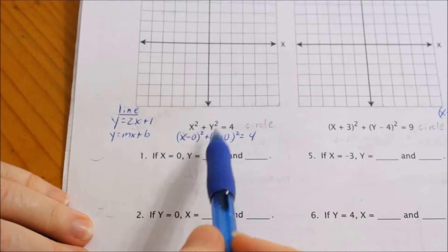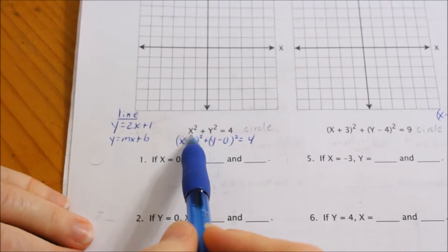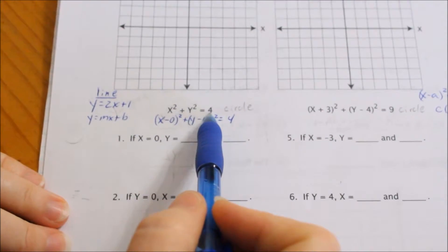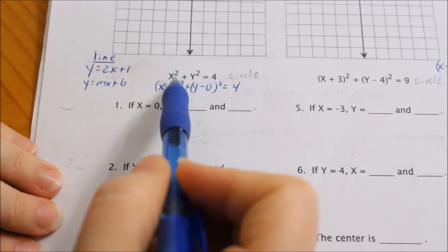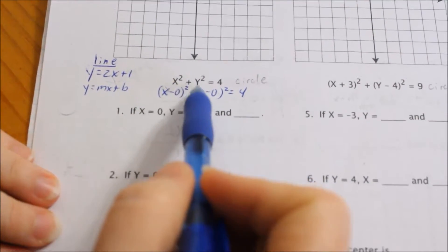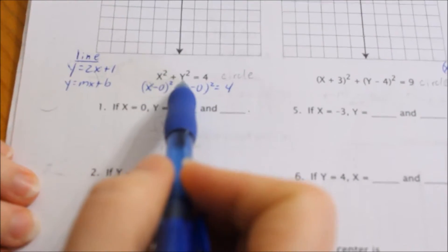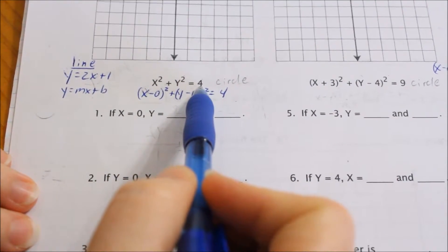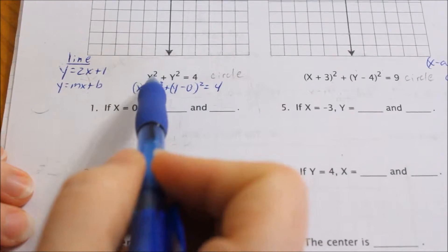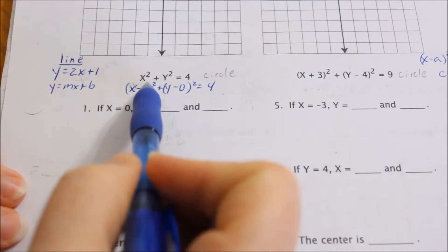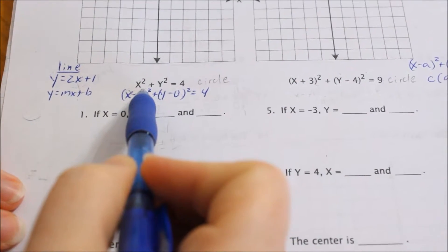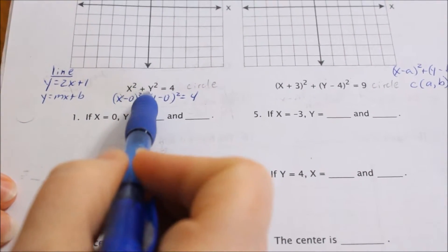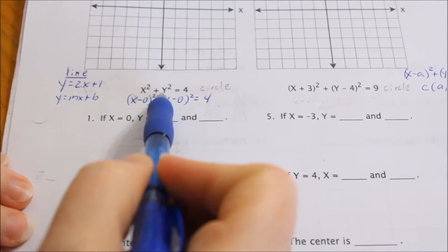The equation of a circle can look two different ways. It can look like this: x squared plus y squared equals 4. This will determine your center of your circle, and this will determine your radius. Notice how the equation of a circle is different from a line — your x is squared and your y is squared.